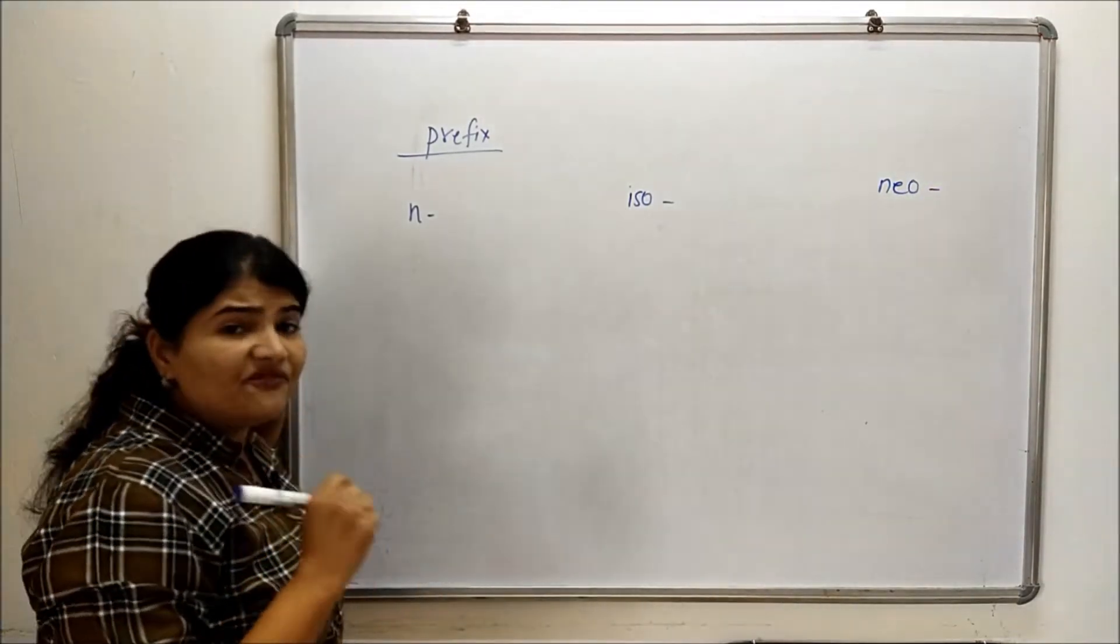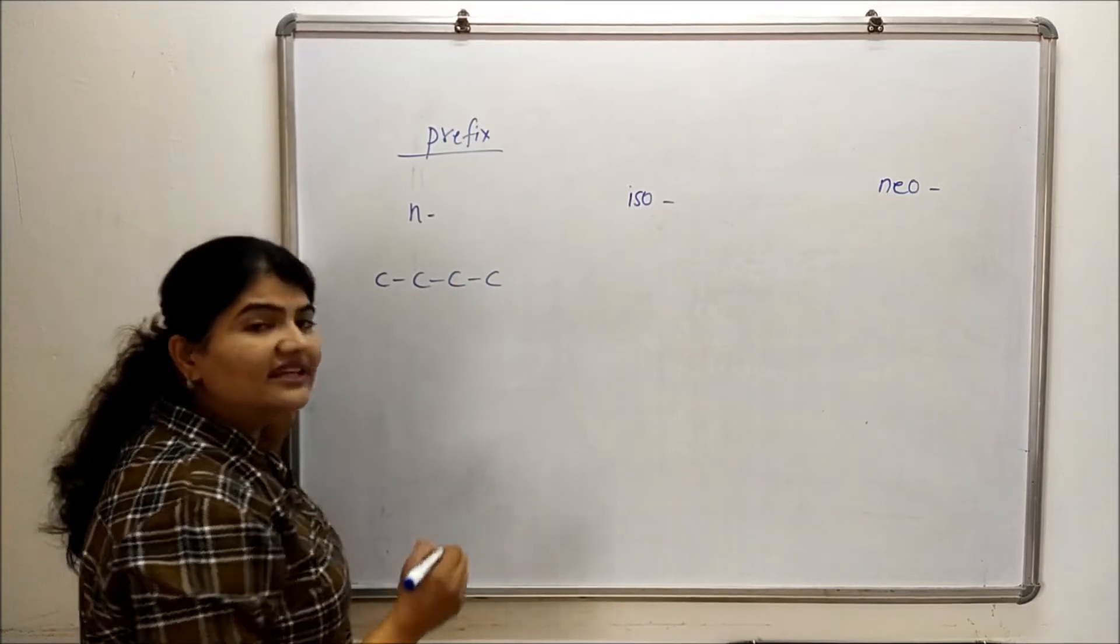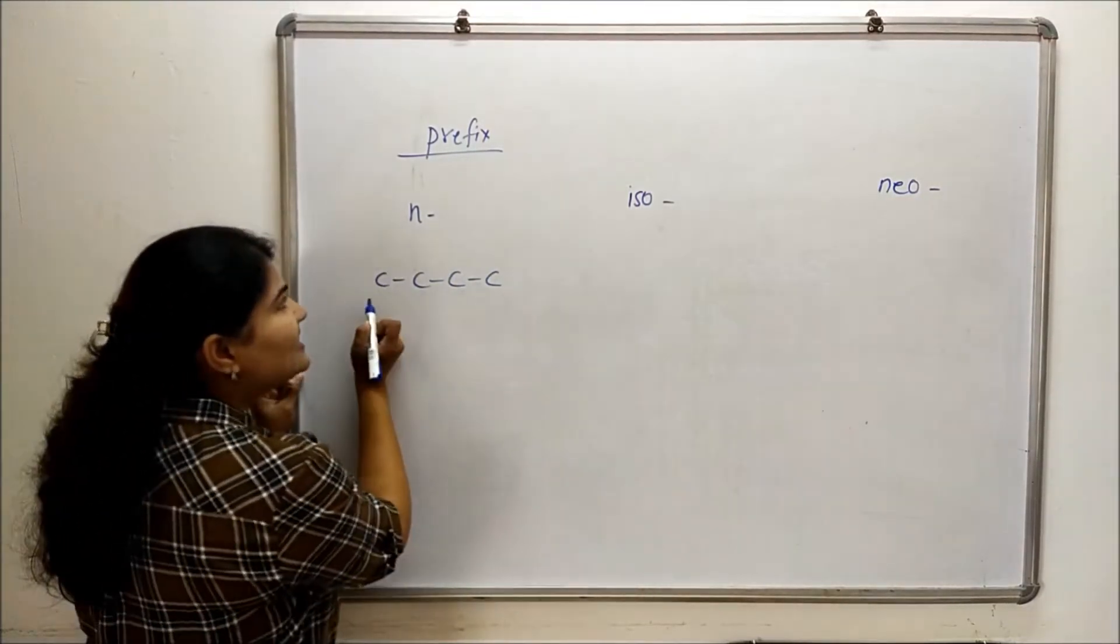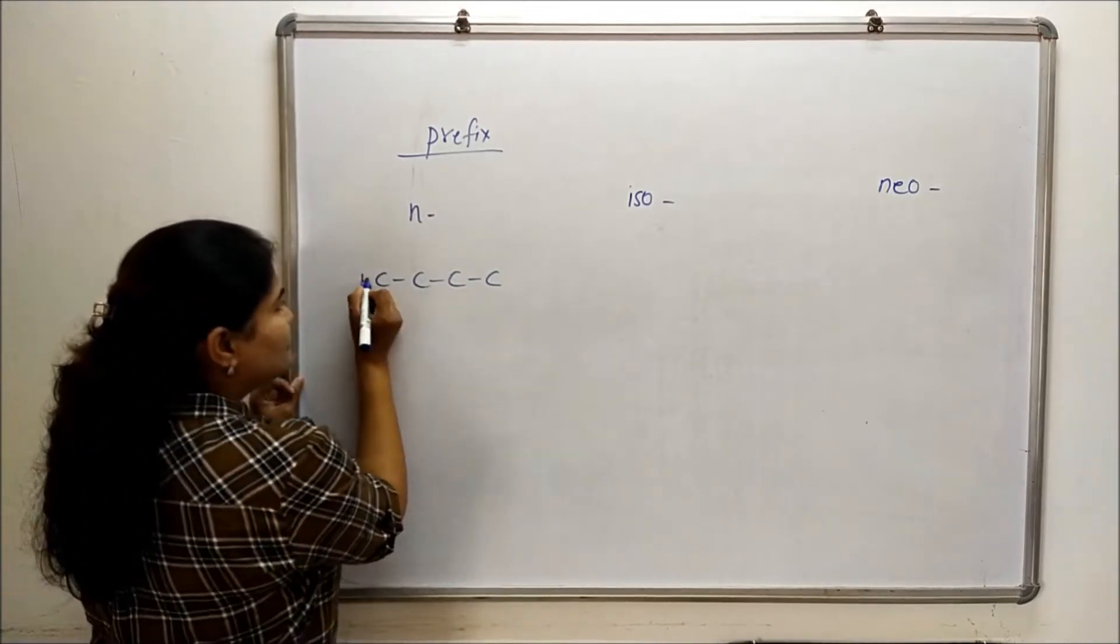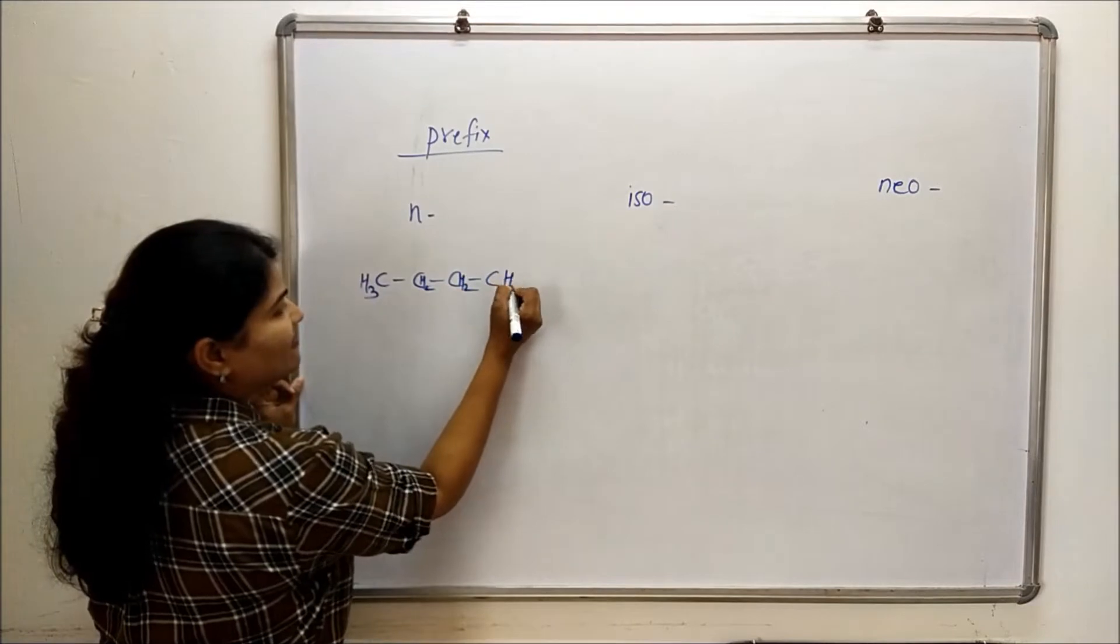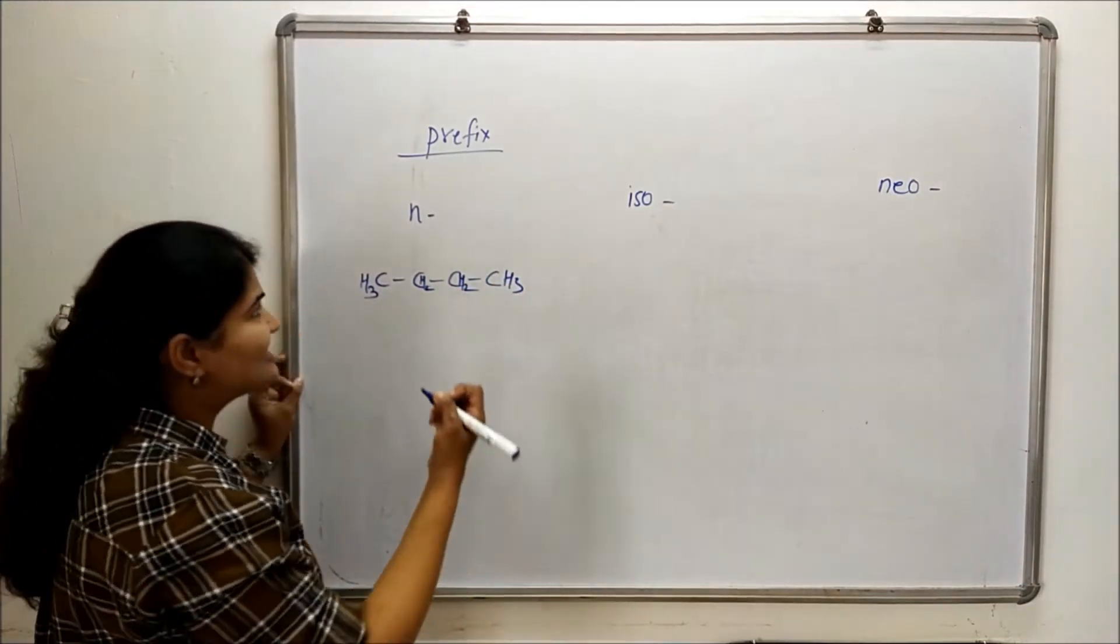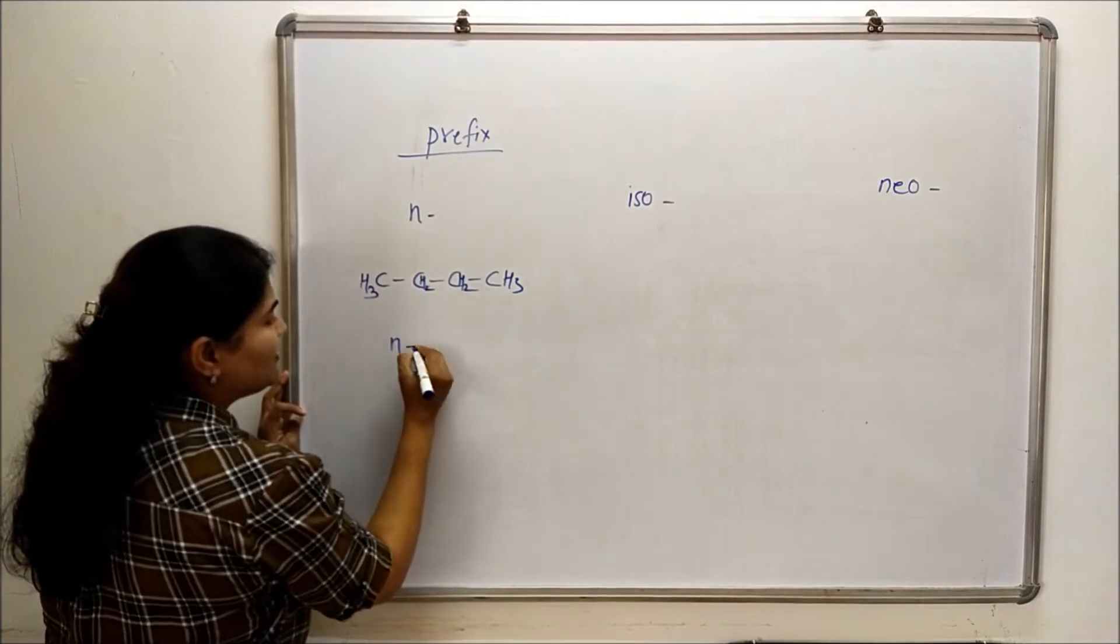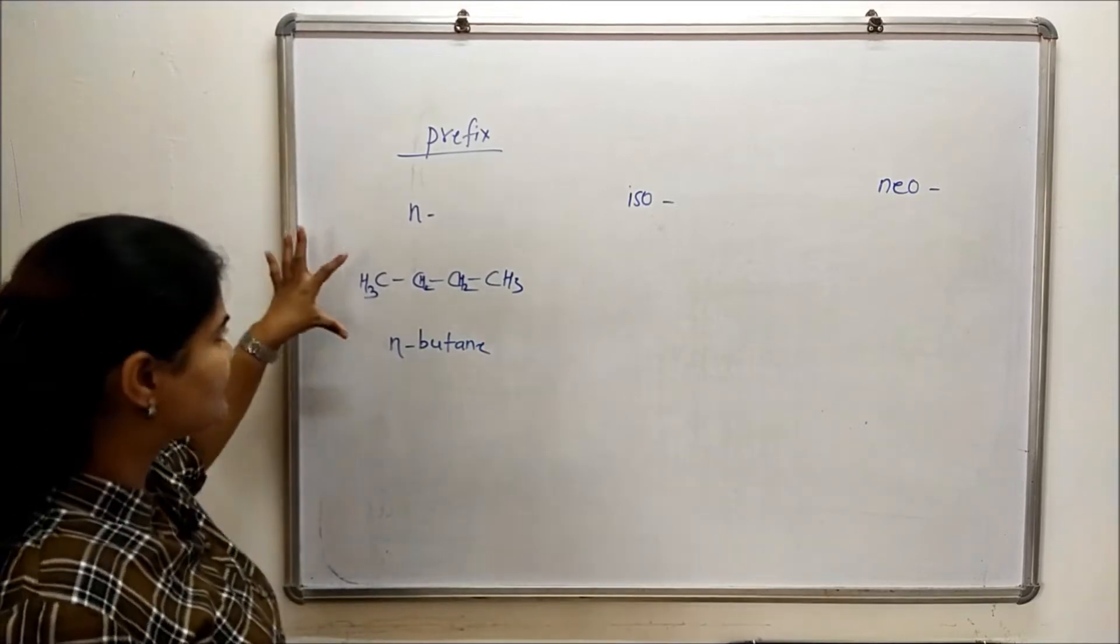If we are dealing with the carbon chain which is continuous, there is no branching, then we have to use the prefix n and just count the number of carbon atoms 1, 2, 3 and 4. So for 4 carbon atoms, we will be using butane as our parent and we will put a prefix n. So the name is going to be n-butane.